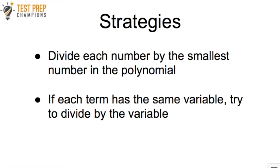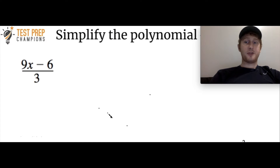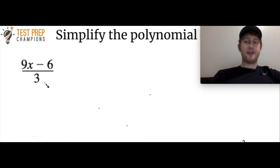A variable is just a letter like an x or a y or something like that. So now let's get right into some practice questions. The first example is simplifying the polynomial 9x minus 6 divided by 3. Go ahead and pause the video, give this one a shot, and then we'll go over how to do it. Hopefully this one is pretty simple, but if not, that's okay — don't worry about it.